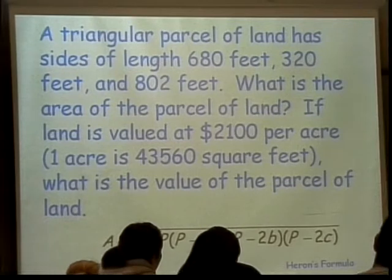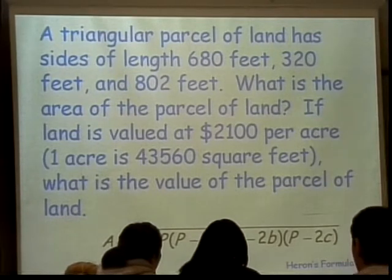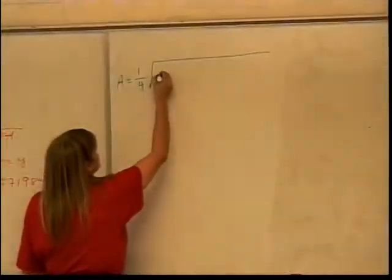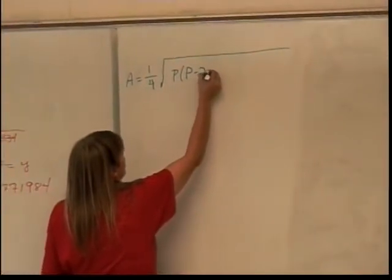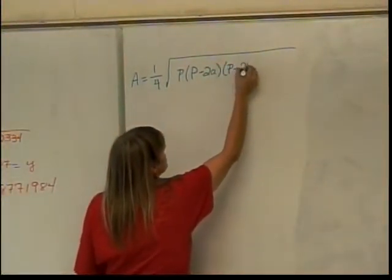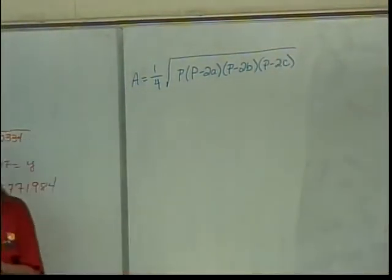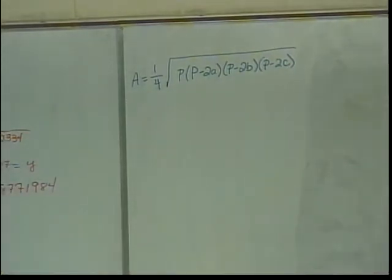You can't see the formula? So the formula is one quarter, and I'll write it over here. One quarter times the square root of the perimeter times the perimeter minus two times one side times the perimeter minus two times the other side times the perimeter minus two times the third side. All right, so what should I do? Do I even need to draw the triangle? The formula doesn't require me to actually draw the triangle, it tells me what my three sides are. I just need to find the perimeter.